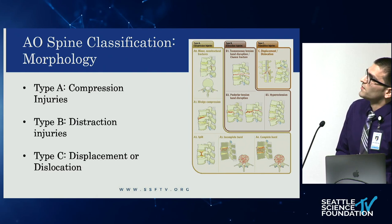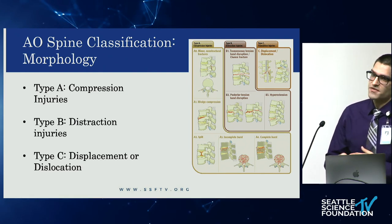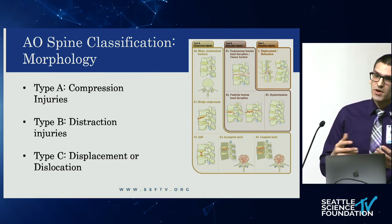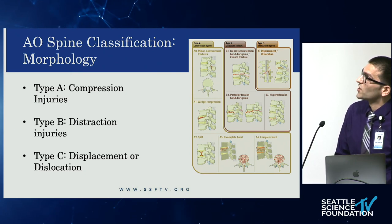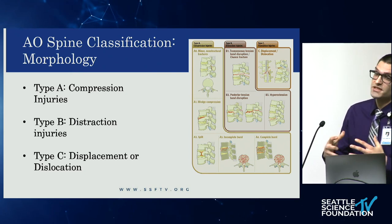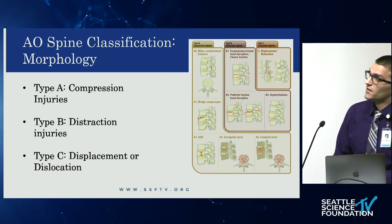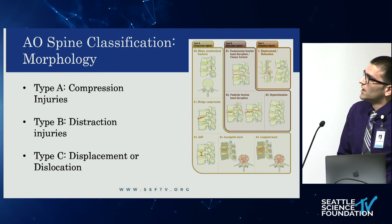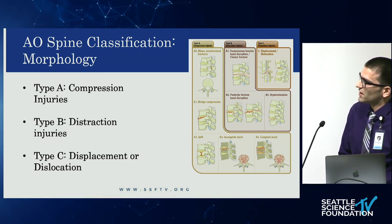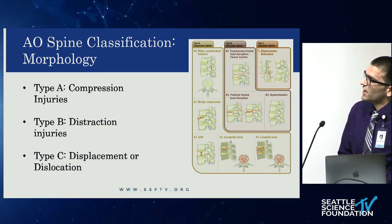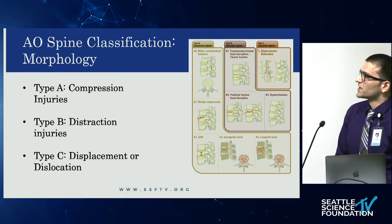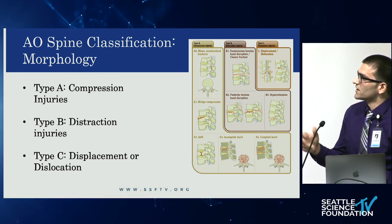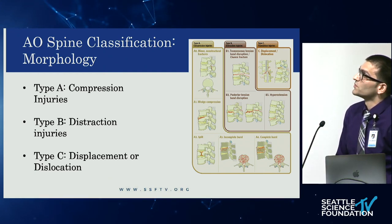Type A0 is the minor non-structural fracture — fractures through the spinous or transverse processes where the overall structural integrity of the vertebral column is intact. A1 is your classic wedge compression fracture. A2 is a coronal split. A3 is your incomplete burst fracture. A4 is your complete burst fracture.